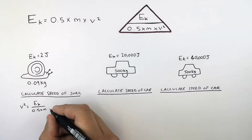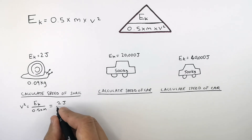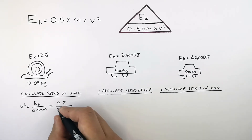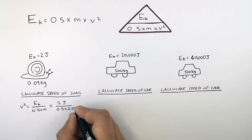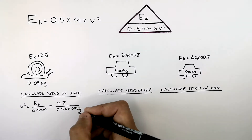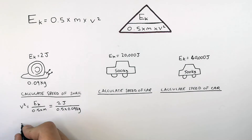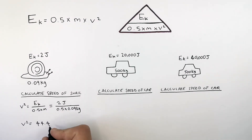So you now substitute in the numbers. Kinetic energy is 2 joules. You divide 2 joules by 0.5 times 0.09 kilograms. That will give you a V squared of 44.4.